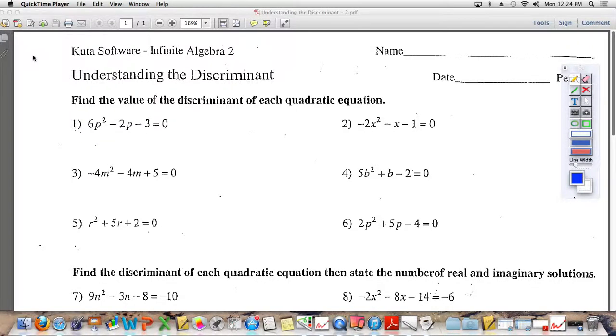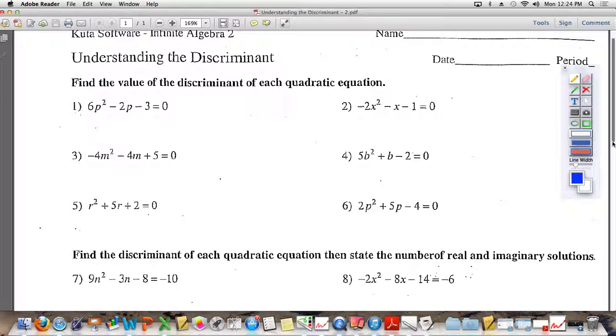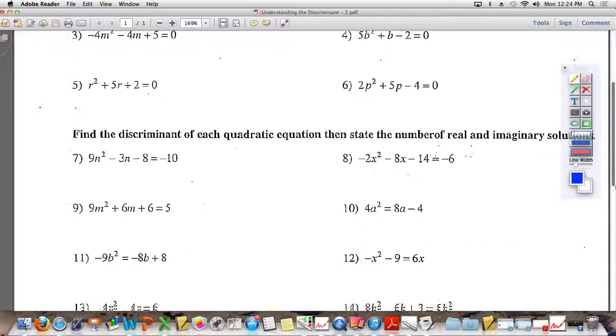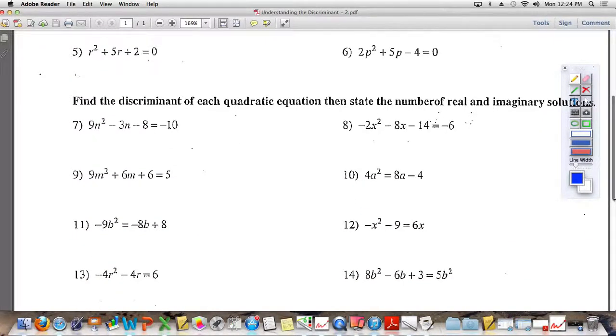All right, the other day we were working on understanding the discriminant, and when you got to number 7, you had to start finding me a value for the discriminant, and then you had to start telling me what it meant. And I believe when you did number 7, the discriminant, the b squared minus 4ac value, ended up being a negative number, I believe. Is that right?